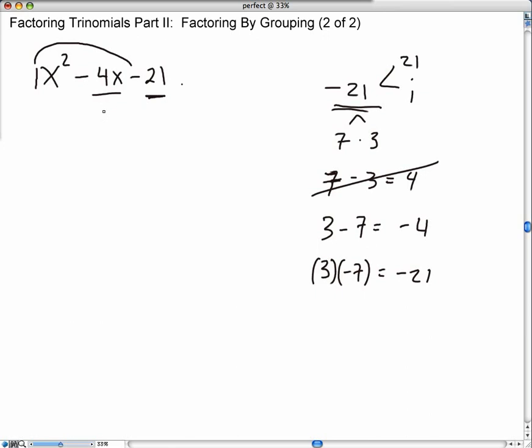So, all this work is so that we can split the middle term. So, we get x squared, negative 4x, negative 4x is going to turn into a plus 3x and a minus 7x, which is the other factor, and then negative 21. So, when we multiplied these two numbers and found two factors, and then somehow added or subtracted those two factors to get the middle term, then we split the middle term into two terms.